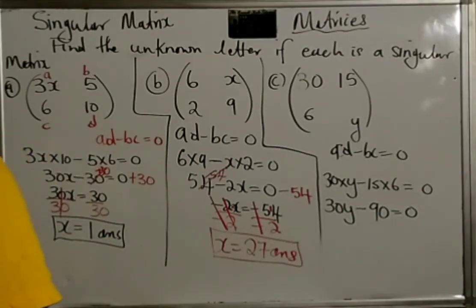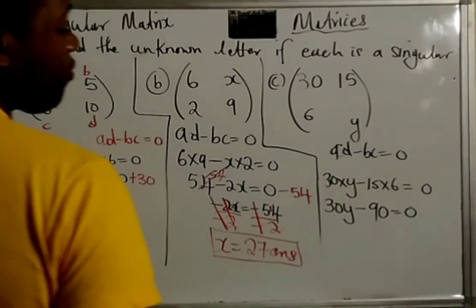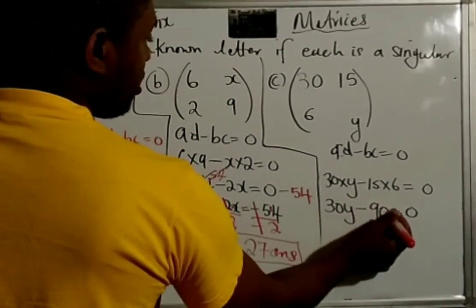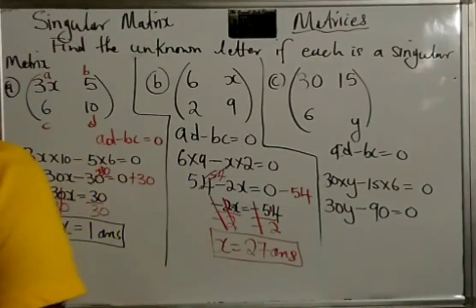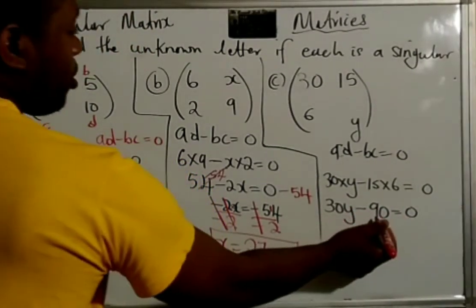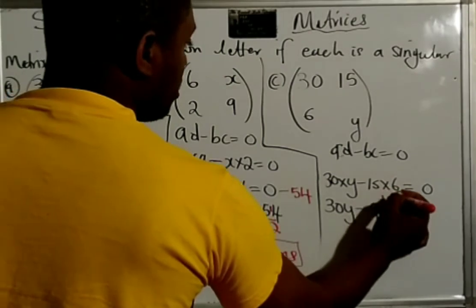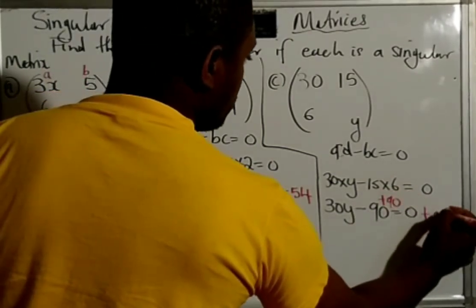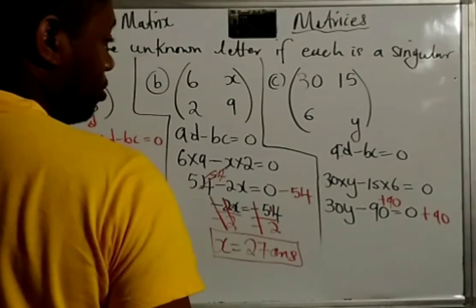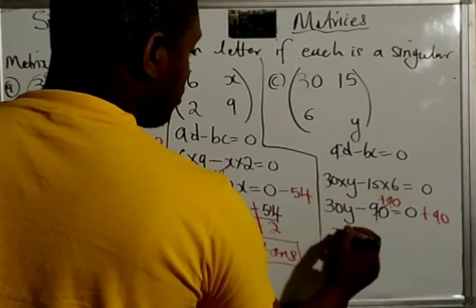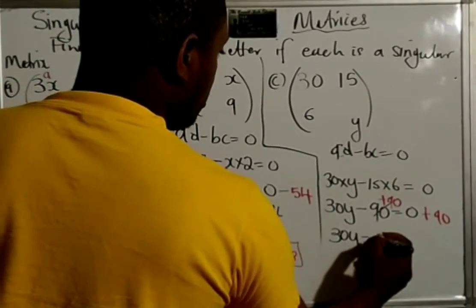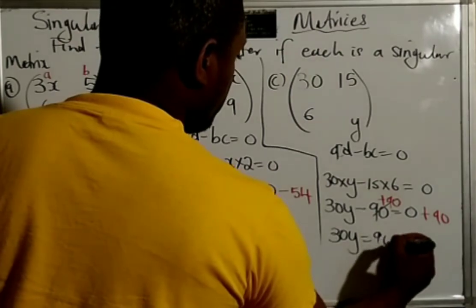So, now we want to solve for Y. We want to get Y by itself. So, we're going to get rid of the negative 90 and the 30. We'll have to do it in order. The furthest one, which is this. So, we add 90 to this side. We do to one side, we do to both sides. So, we're left with this. This goes to 0. So, 30Y is equal to 0 plus 90 is 90.